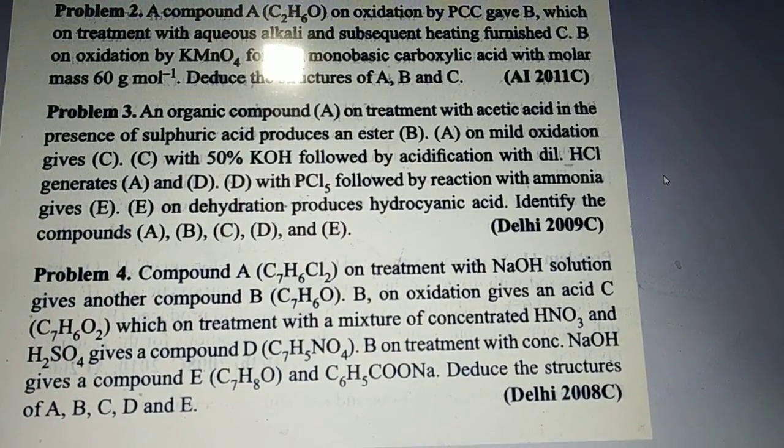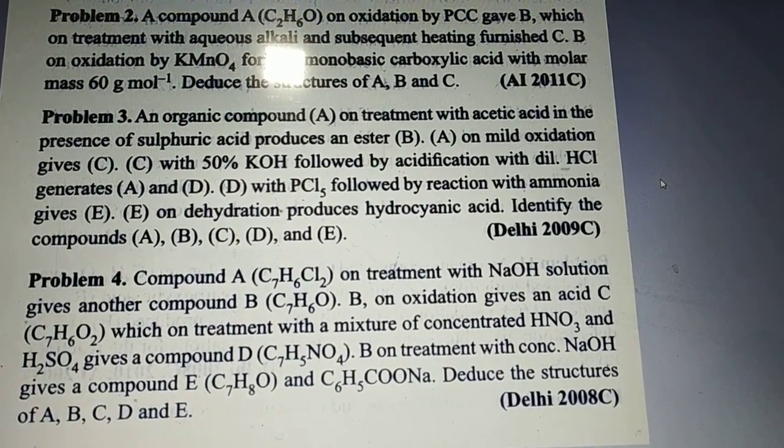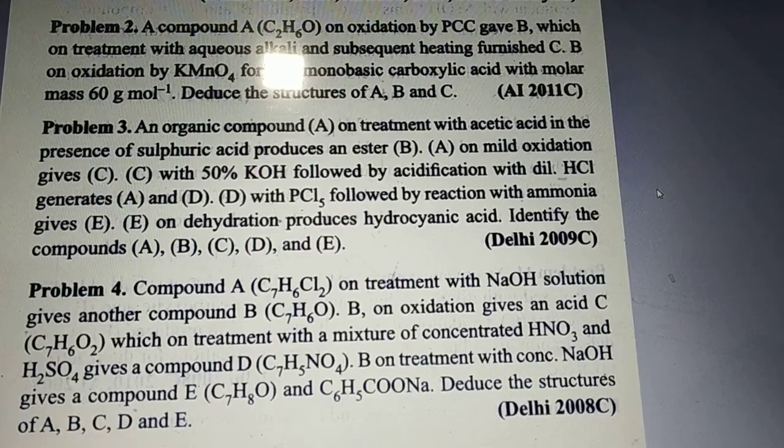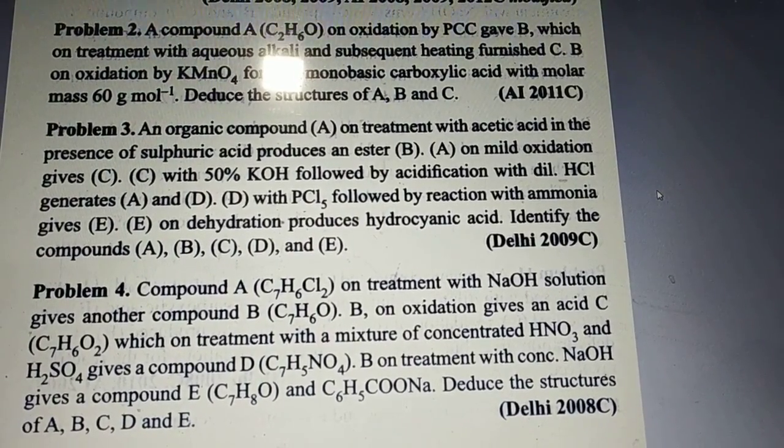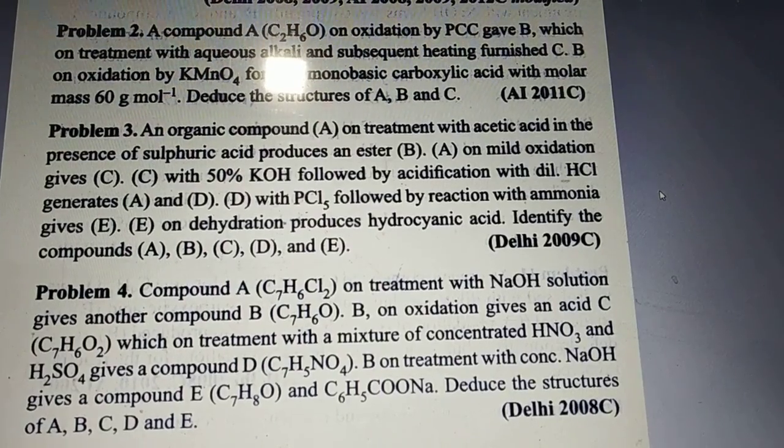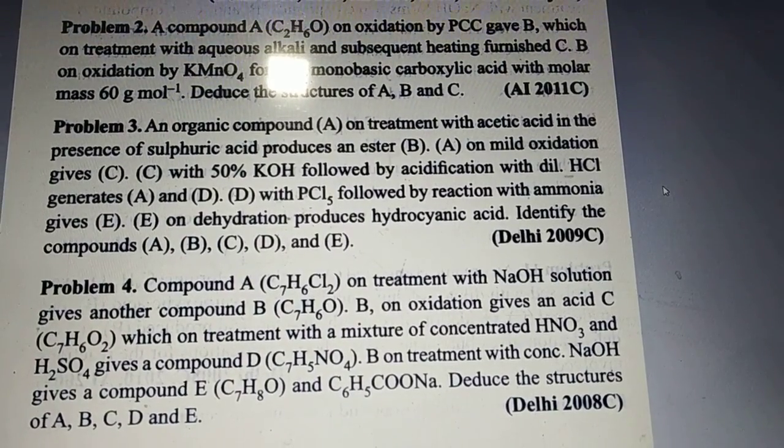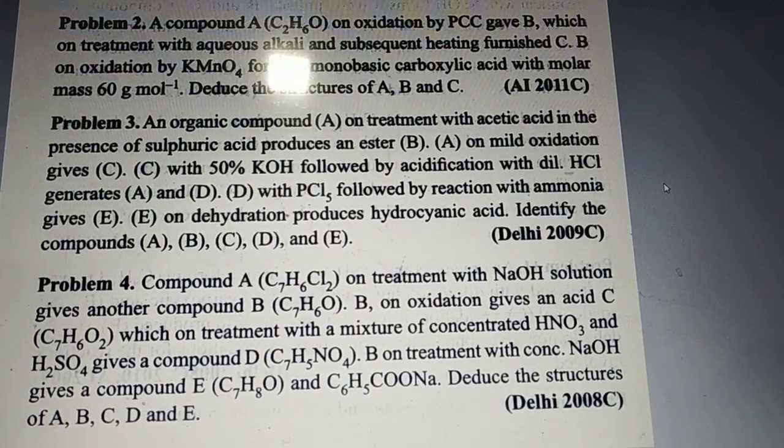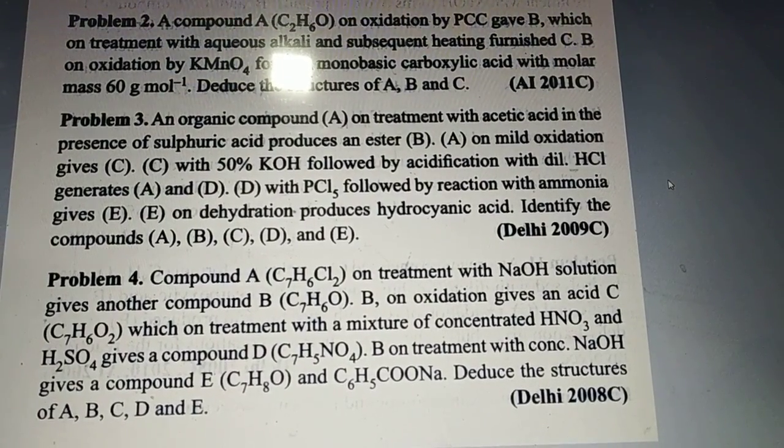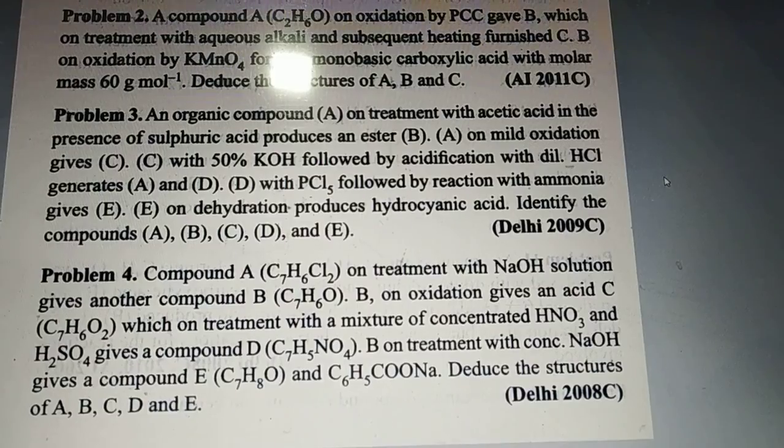Deduce the structure of A, B, C, D, and E. Now look at the last line, you have a very beautiful hint. B on treatment with concentrated NaOH gives two compounds. What is the name reaction? Cannizaro. Just because Cannizaro uses concentrated NaOH and at the end we always get two products: one is alcohol and another is sodium salt of acid. So B compound should be benzaldehyde because benzaldehyde only undergoes Cannizaro reaction and you get these two products.